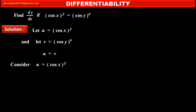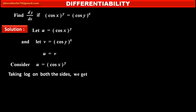First, we have to consider u is equal to cos x raised to y. To make it simple, taking log on both the sides, we get log of u is equal to log of cos x raised to y. By using law of exponent of logarithm on the right-hand side, we get y into log of cos x.